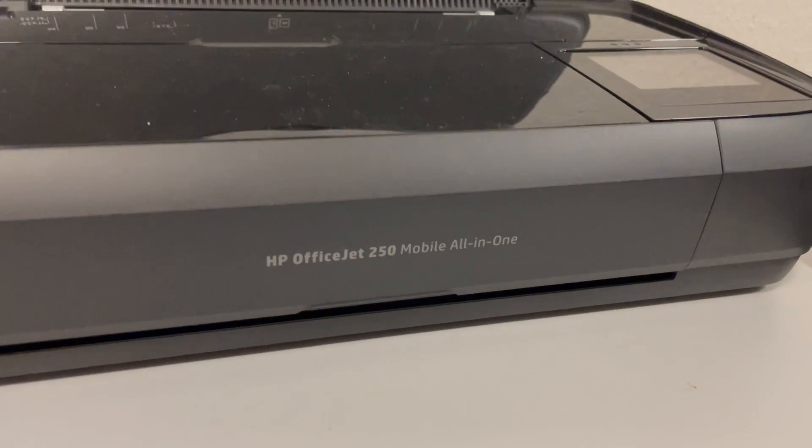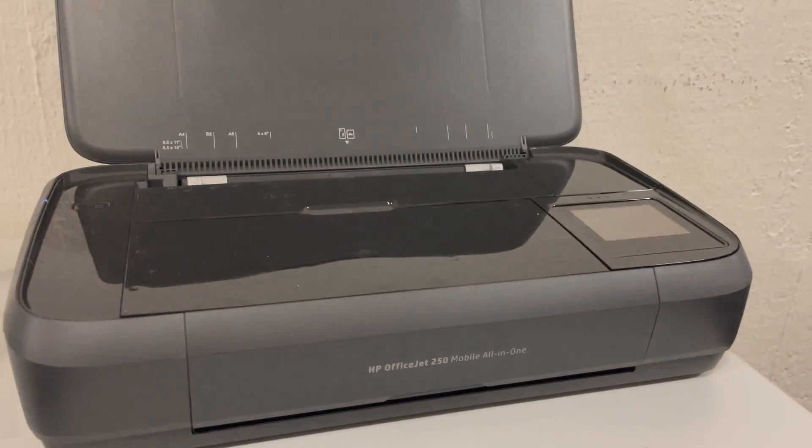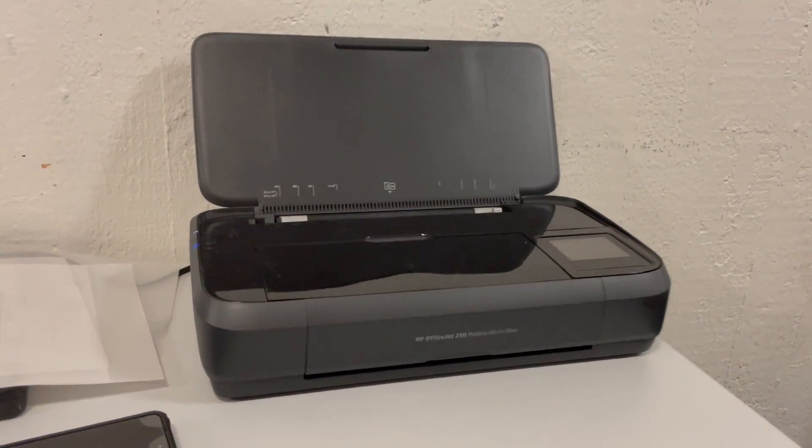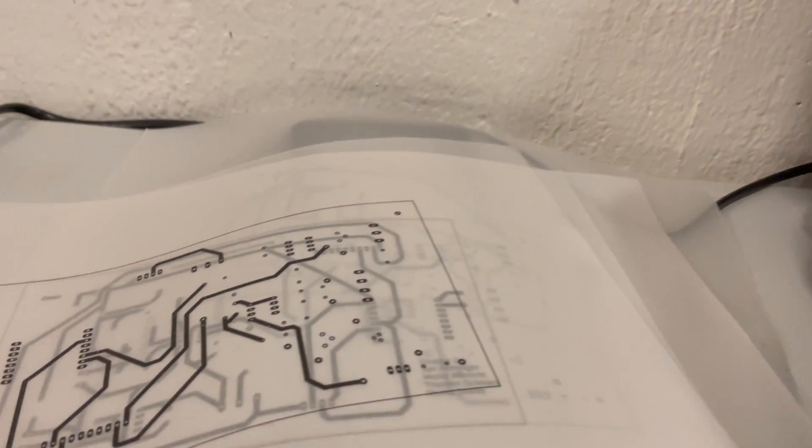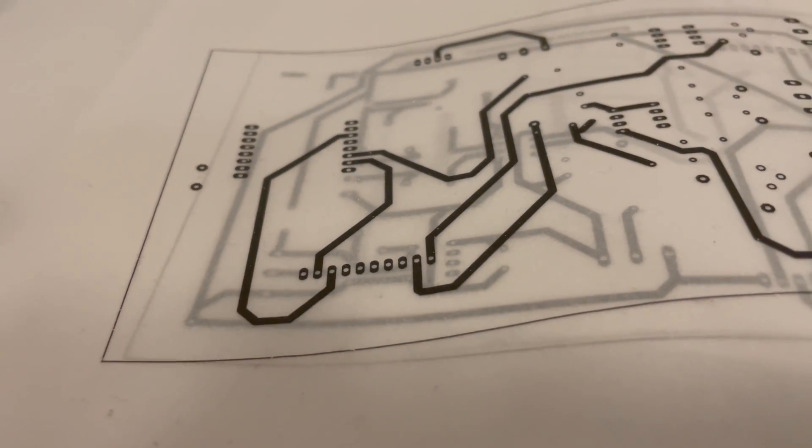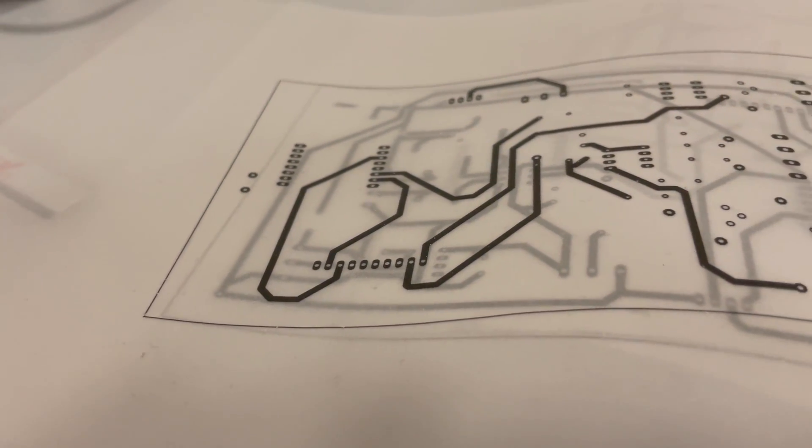First of all we need to print the actual film we need to produce our PCB, but if you want to know more about this check out our video about how to make a PCB film. Anyway that's how the end result should look like and that's what we're going to use to do the exposure.